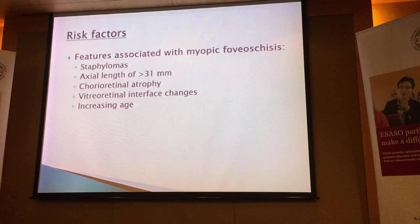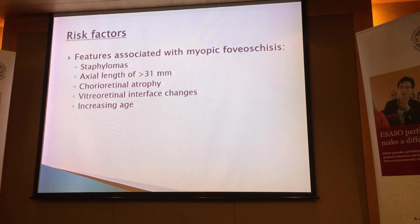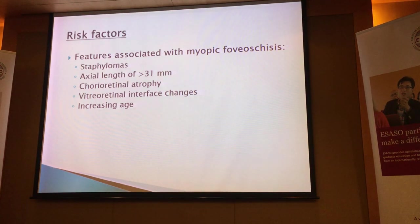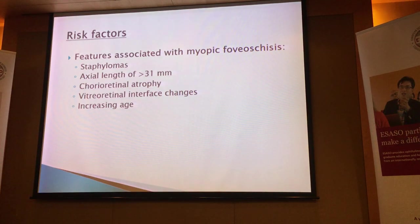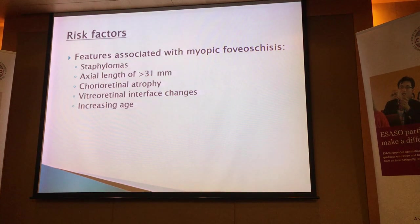What are the risk factors in myopic schisis? Patients would have a staphyloma. They're also more likely to have very long axial lengths — axial lengths more than 31 millimeters. They would also have extensive chorioretinal atrophy. If you look at the vitreoretinal interface, you'll very often see pre-macular elements, pre-macular structures, and traction as well. The older a highly myopic patient is, with high axial length and staphyloma, the more likely they are to have schisis.